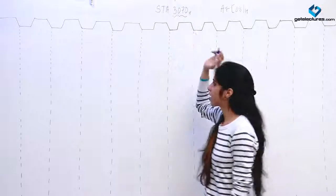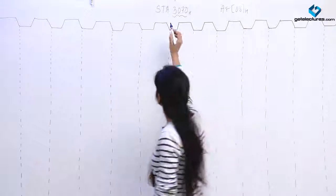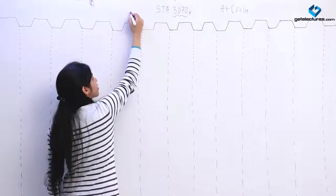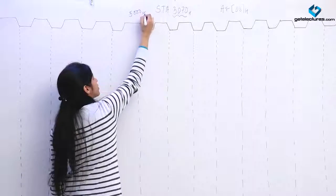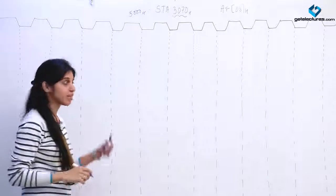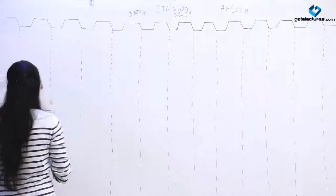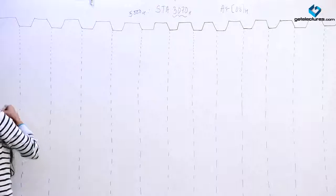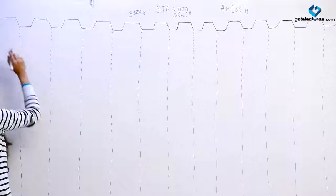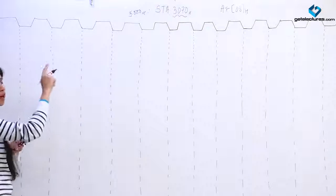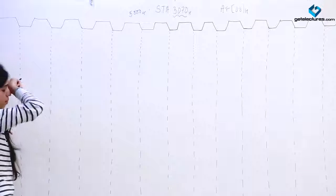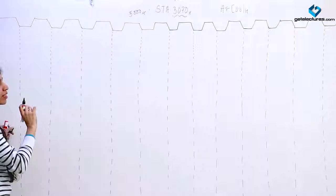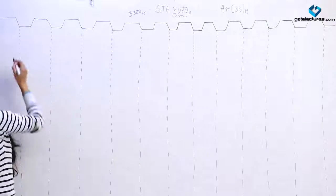Now let us look at the timing diagram. Suppose the starting address for this instruction is 5000H — this instruction is starting at 5000H. First of all we are going to put 5000 on the address bus: 50 on the first 8 bits of the address lines and 00 on the next 8 lines.